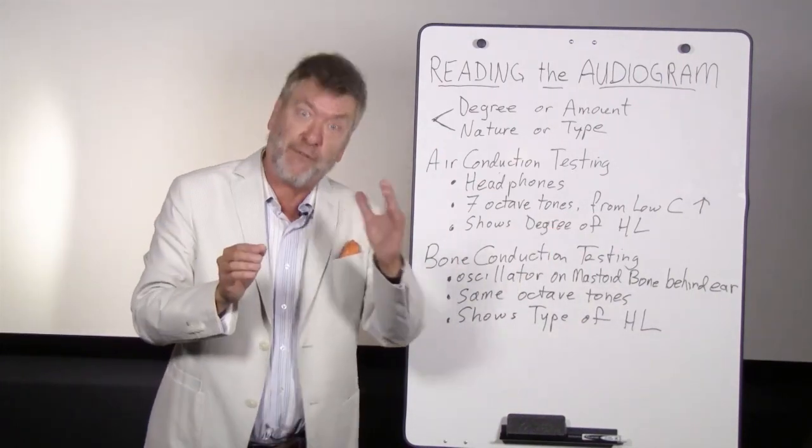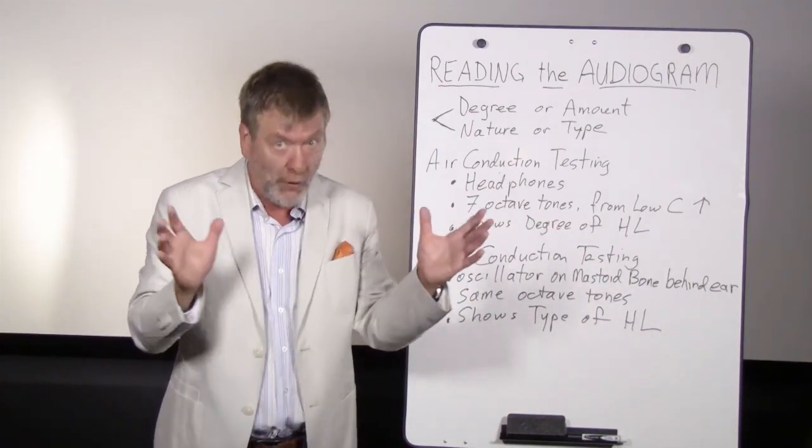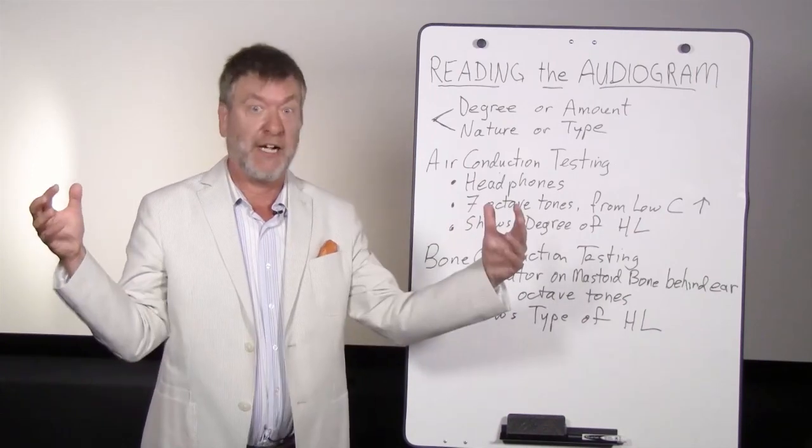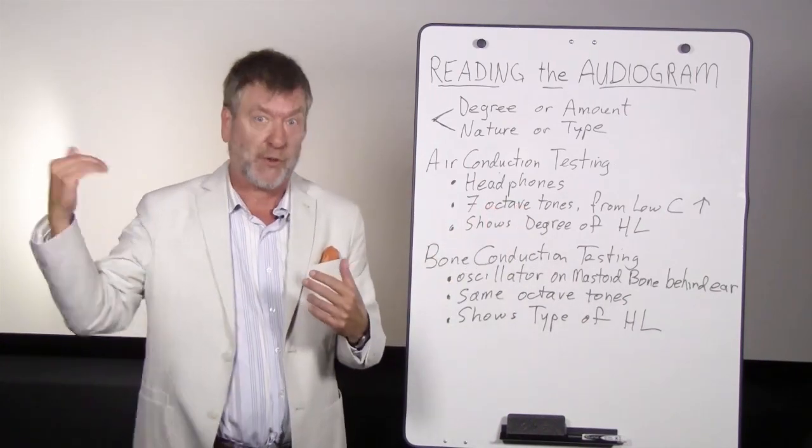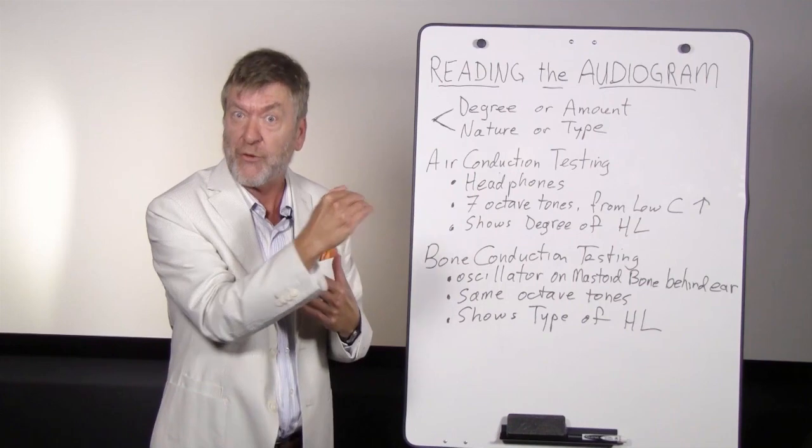So the audiogram normally spans a pitch range from low C all the way to 8,000 cycles or 8,000 hertz. So bass, mid, and high frequencies are all presented. This way we get an idea of the patient's hearing levels across the whole hearing range of pitch or frequency.